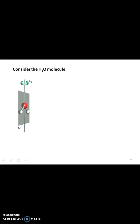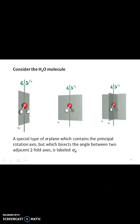Consider the water molecule. Here, C1, C2, and the three figures. A special type of sigma plane which contains the principal rotation axis but which bisects the angle between two adjacent two-fold axes is labeled as σd.